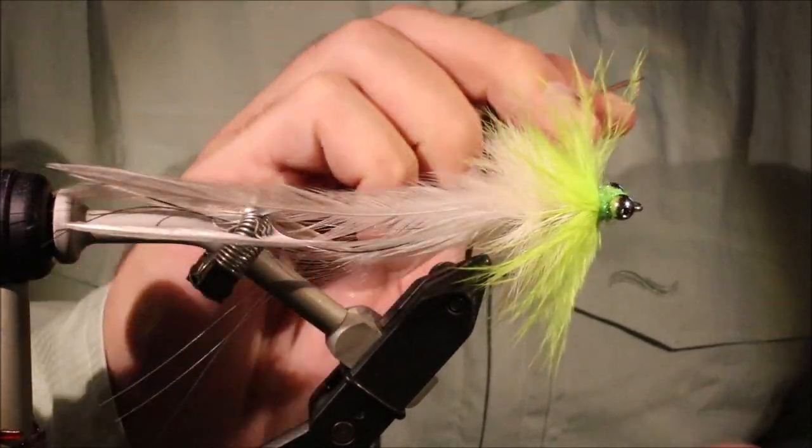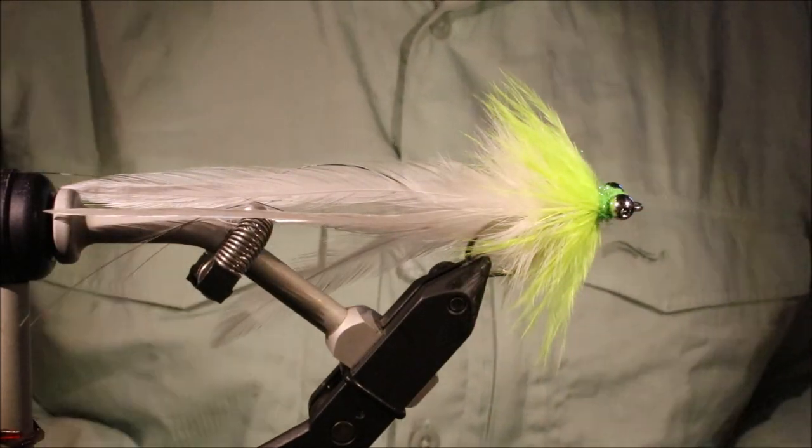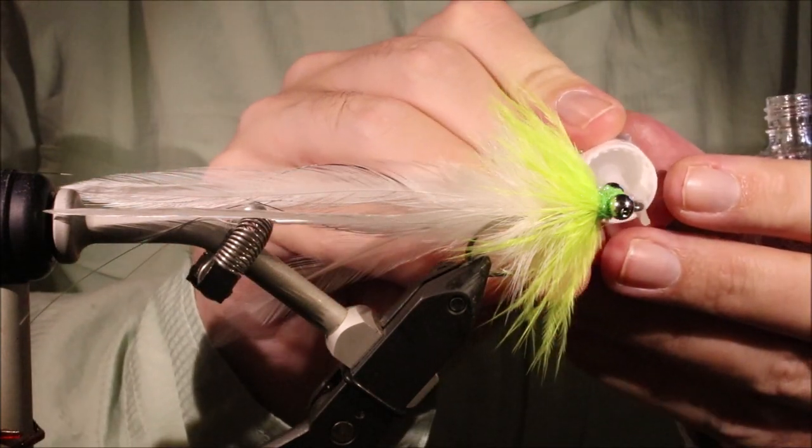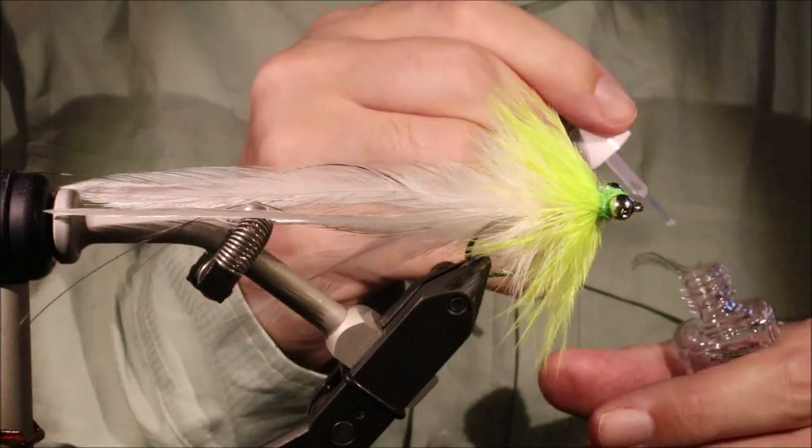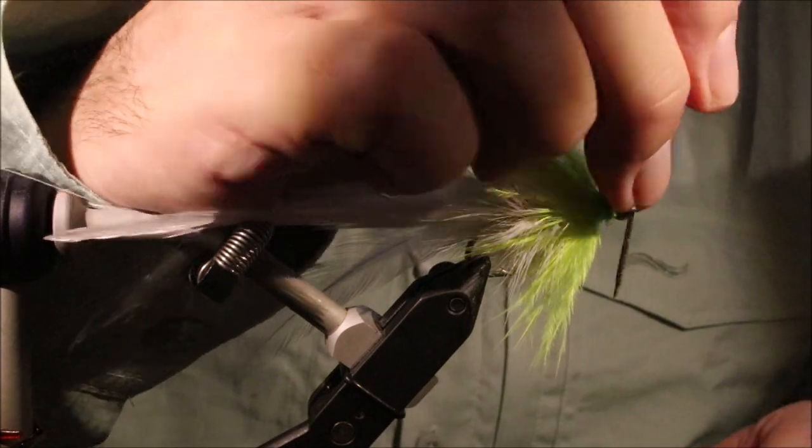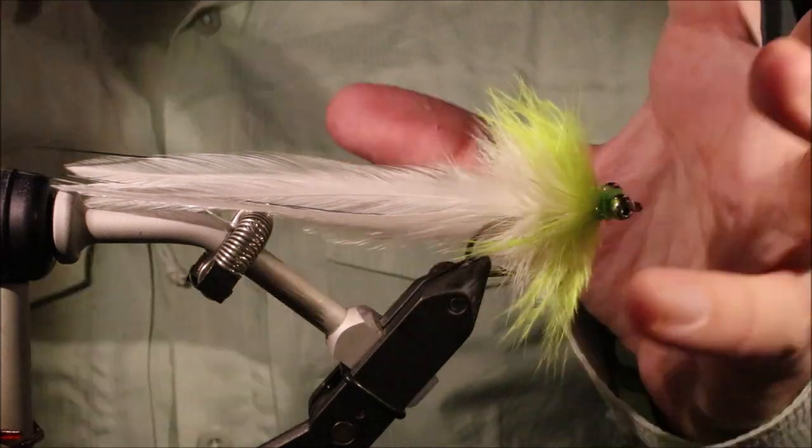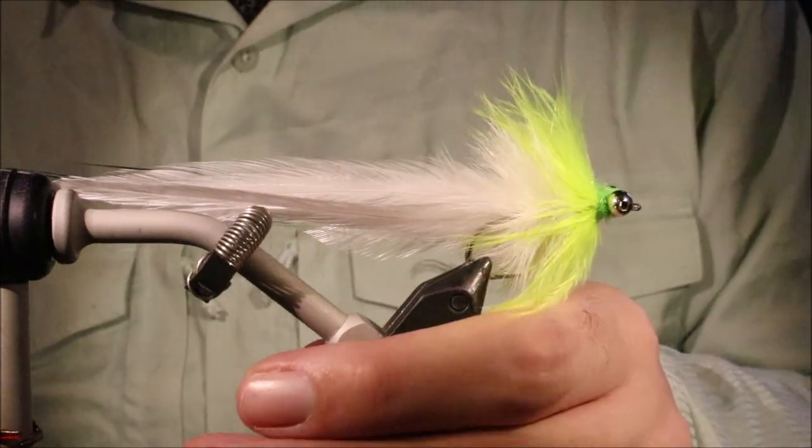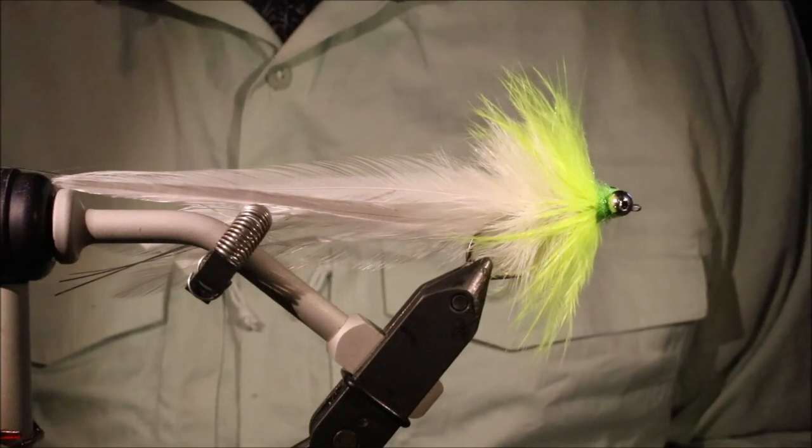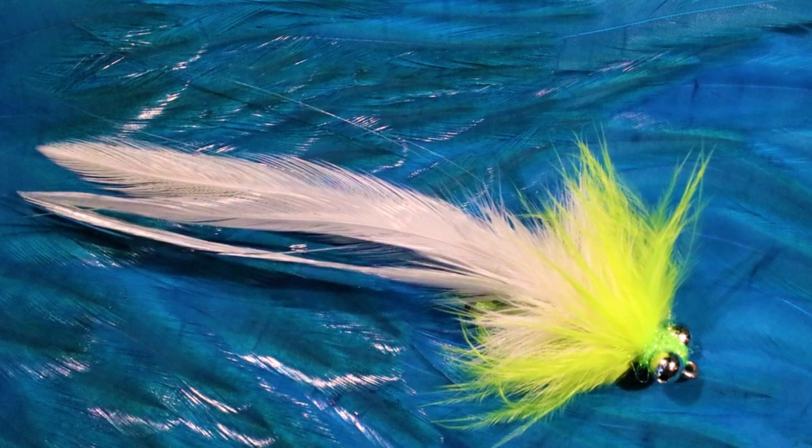But there you go, that's basically the bead chain seducer, a fantastic salt water fly. Right, it works for everything, anything that eats a bait fish or you would, a streamer type situation will eat this. Easy to tie, very simple, but very effective. So I hope that was useful, I hope you enjoyed it, if you did please remember to give me a thumbs up below and subscribe to the channel. Tight lines guys, bye.